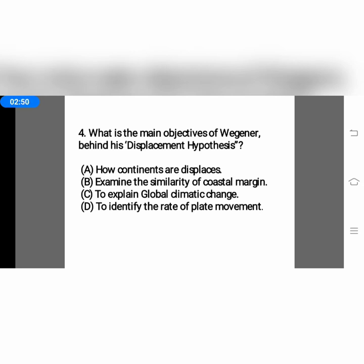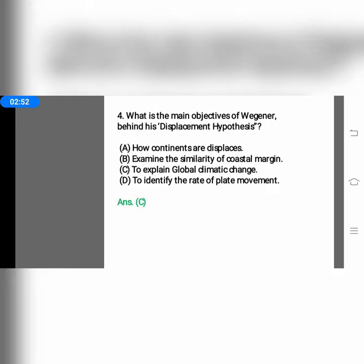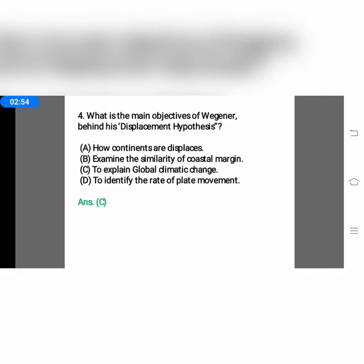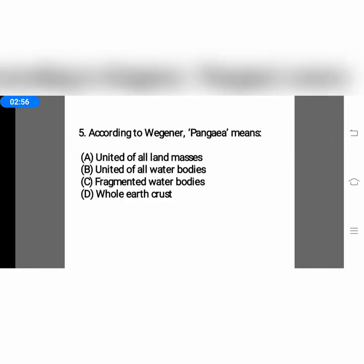The next question: according to Wegener, Pangea means — option A, united of all land masses; option B, united of all water bodies; option C, fragmented water bodies; or option D, whole Earth's crust. Pangea means the union of all land masses, so the correct answer is option A.